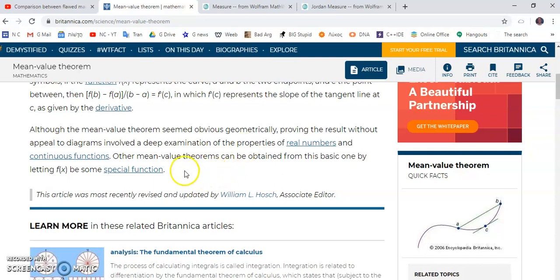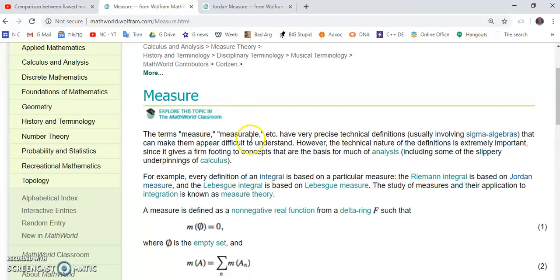On my journey, I came across many things. I read about measures. By the way, measures in analysis are a complete bunch of rot. For example, when they talk about measure in mathematics, you'll see this sort of thing. It says the terms of measure and measurable have very precise, I disagree, technical definitions, usually involving sigma algebras.